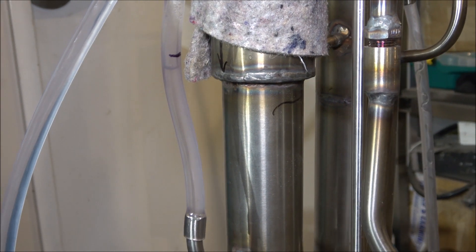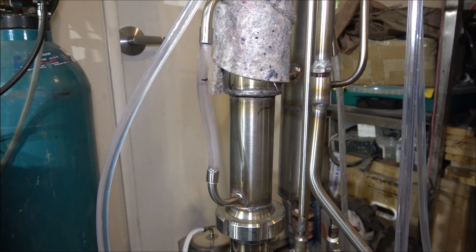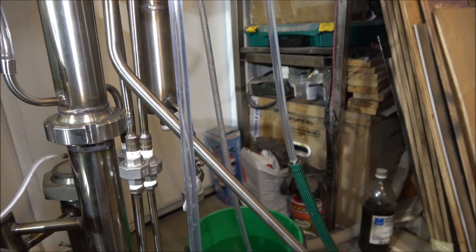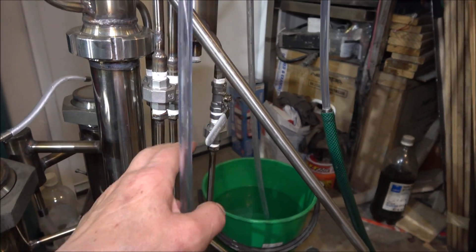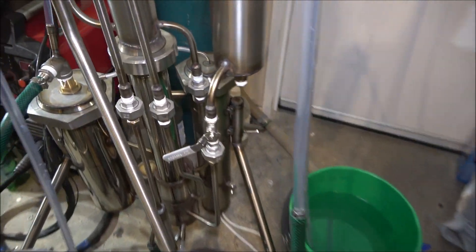At the bottom you can see the level of the wash within the still. The wash supply, or flow of the wash, is controlled by this valve at the very bottom of the column.